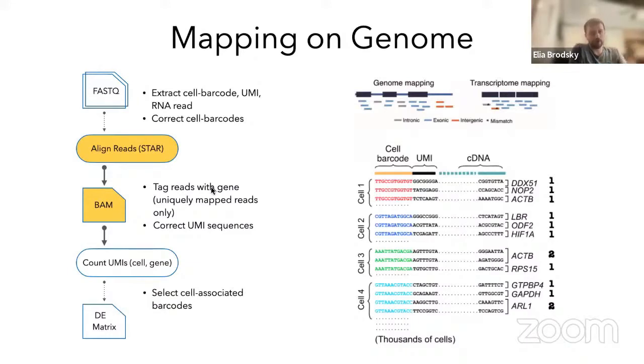We then have to align these reads to the reference genome and generate a BAM file. What is a BAM file? A BAM file is the same FASTQ, but it now tells us the beginning and the end of each read from the perspective of the genome. So you have the starting position and the ending position on the reference genome.